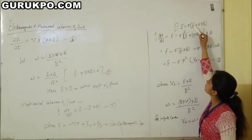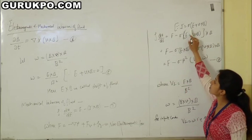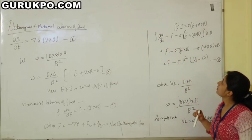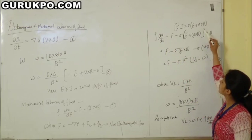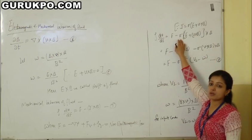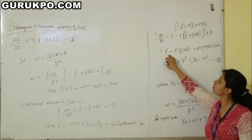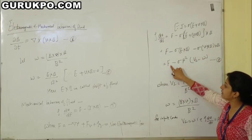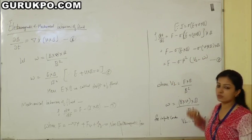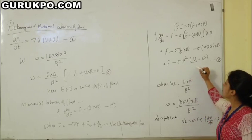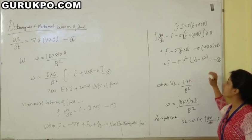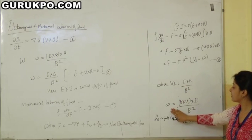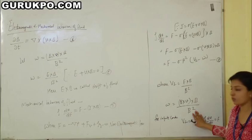Since j equals sigma(E plus v×B), substituting into the force equation gives rho·dv/dt equals F minus sigma(E plus v×B)×curl B. After solving, this becomes rho·dv/dt equals F minus sigma·B²(v_perp minus omega), where v_perp equals (E×B)/B² and w equals (B × curl B)/B².